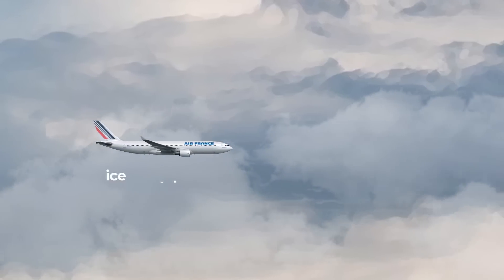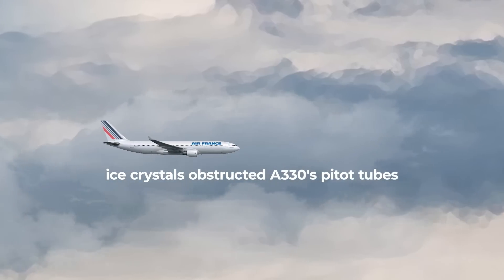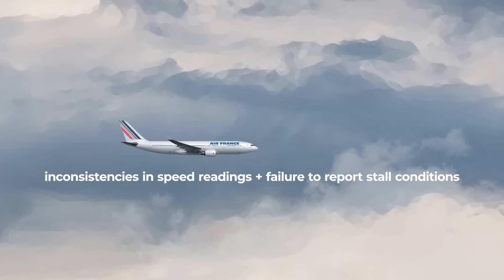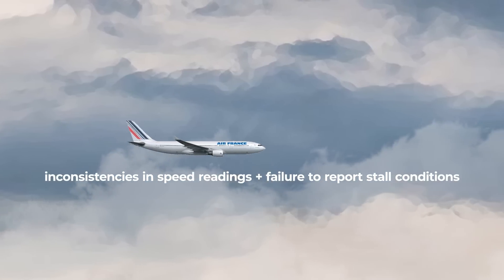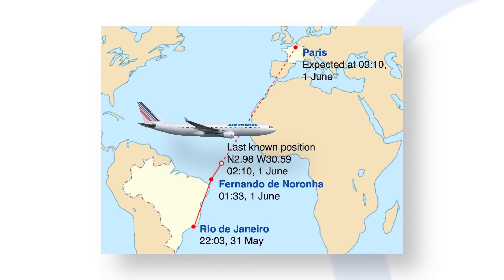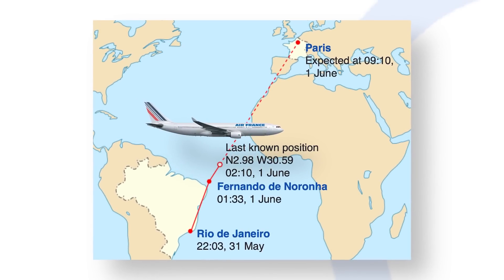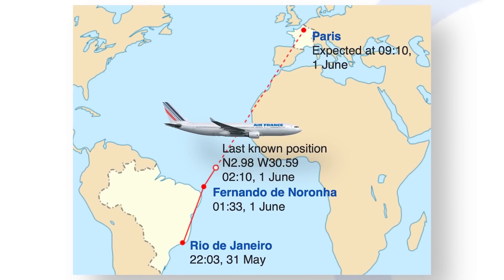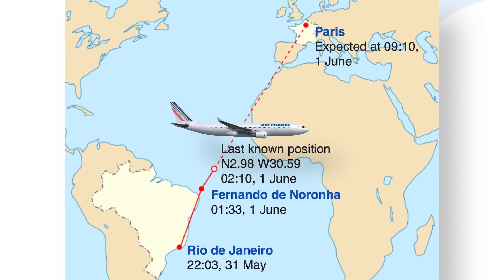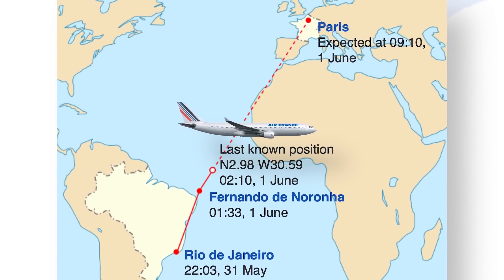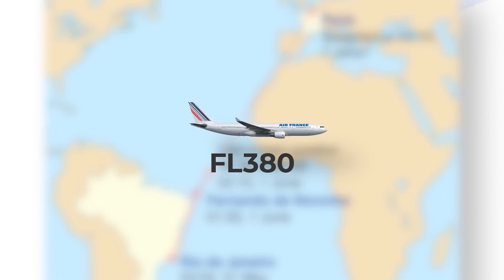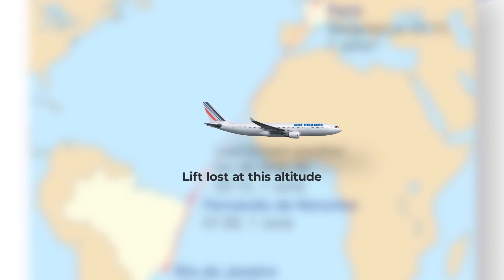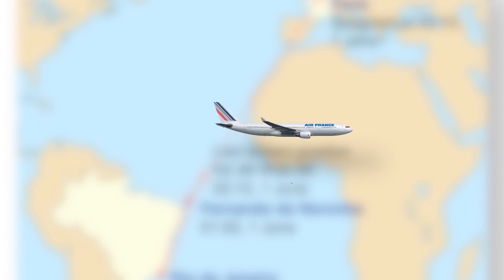This is because the accident happened after ice crystals obstructed the aircraft's pitot tubes, leading to inconsistencies in speed readings and a failure to report stall conditions. Amid confusion in the cockpit due to the incorrect readings, the flight's crew pitched the aircraft's nose upward to negate a roll caused by turbulence. This caused the aircraft to deviate from its cruising altitude of 35,000 feet, climbing to FL380, at which point it lost lift and experienced the aerodynamic stall that caused the tragic accident.